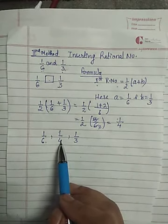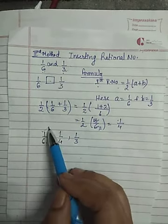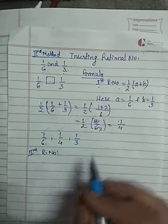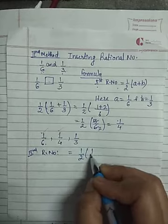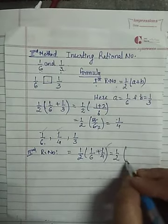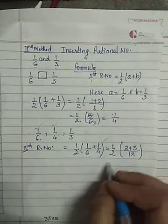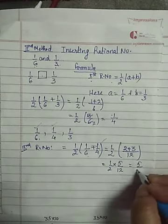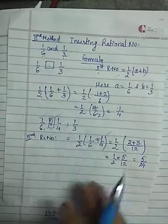Now we have 1/6, then 1/4. Suppose we need to insert two more rational numbers. For the second rational number, I'll use the average method again: half of (a + b) = half of (1/6 + 1/4). The LCM of 6 and 4 is 12, so the numerator becomes 2 + 3 = 5, giving half × 5/12 = 5/24. So the second rational number is 5/24.